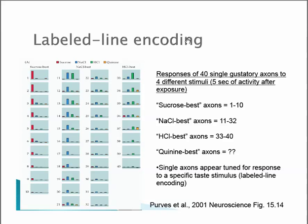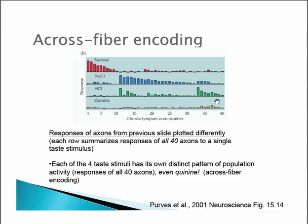Labeled line encoding essentially means that you have single axons which are tuned for a response to a specific type of taste stimulus. So if we were looking at axons 1 through 40, axons 1 through 10 seem to respond best to sweet stimuli, 11 through 32 might be optimally tuned for salty stimuli, and axons 33 through 40 tuned for sour stimuli. However, if you map this data in a different view, you could also argue that it's a specific population activity across all axons 1 through 40 — a population response representing how taste is actually being encoded.